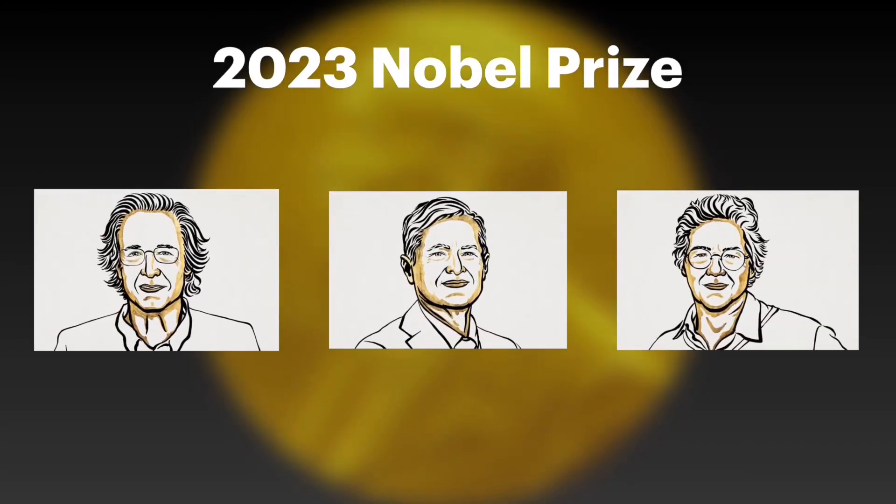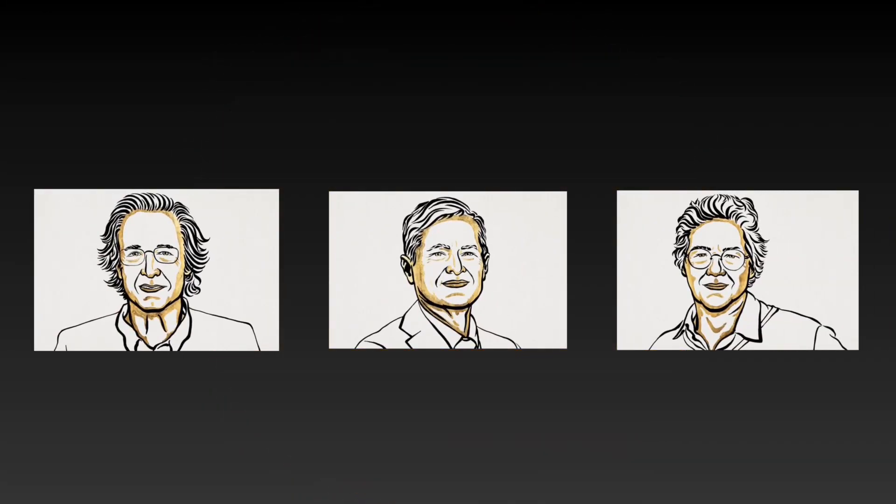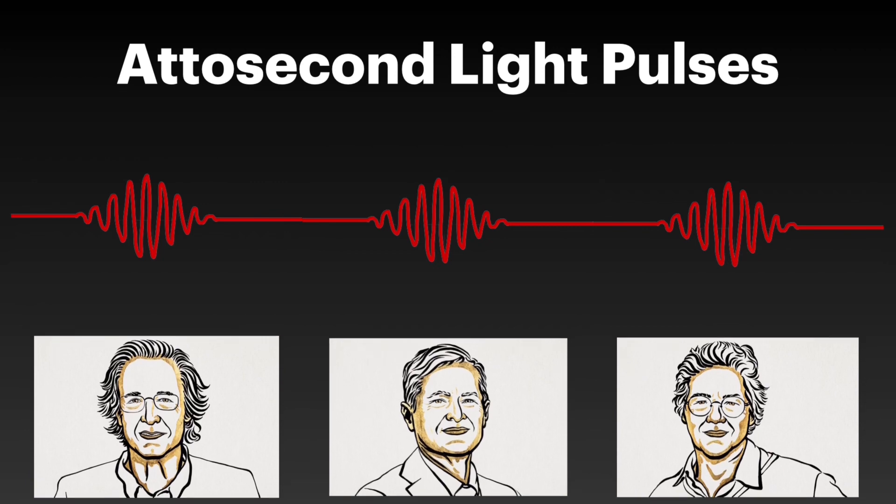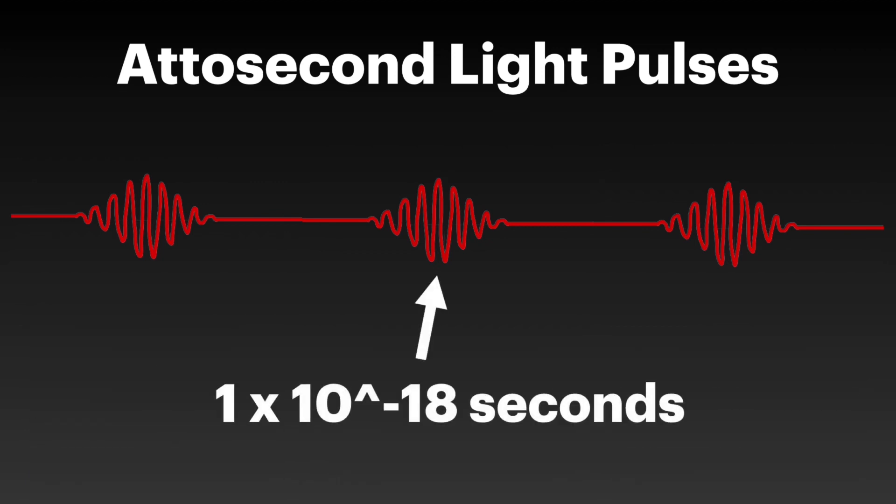Three physicists have won the 2023 Nobel Prize for creating light pulses on the order of attoseconds. That's 1 times 10 to the negative 18 seconds long.